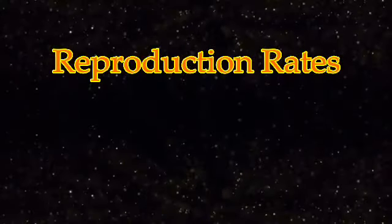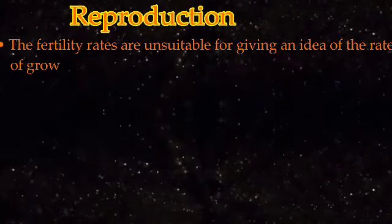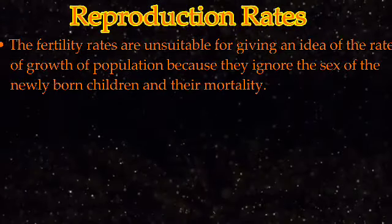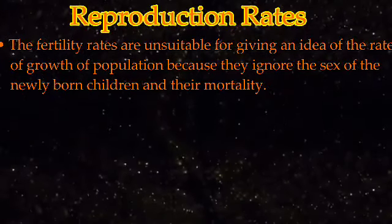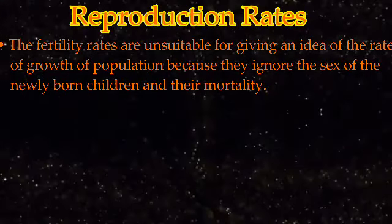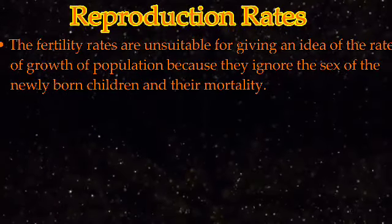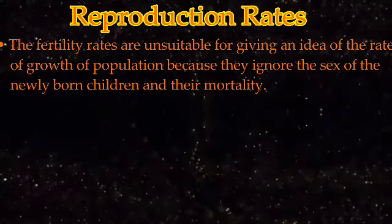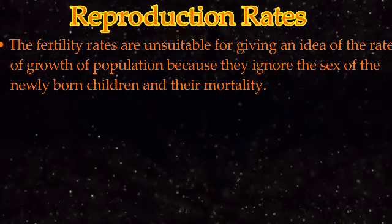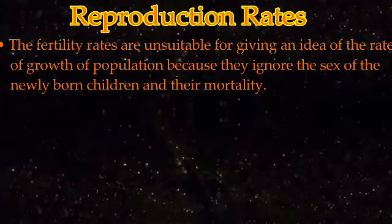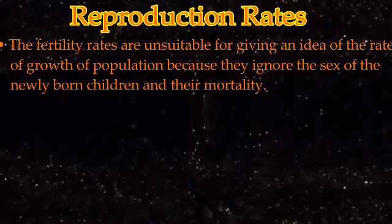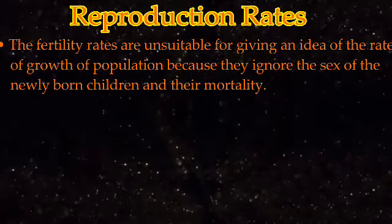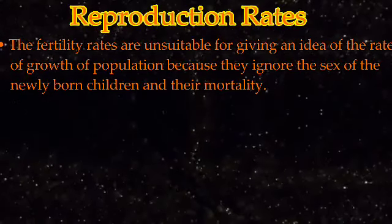The reproduction ratio is computed by establishing a ratio between the number of daughters and that of their mothers. Fertility rates are unsuitable for giving an idea of the rate of growth of population because they ignore the sex of the newly born children and their mortality. In order to find population growth we should consider both birth and death rate, but in the concept of fertility only birth rate is considered whereas the death ratio is ignored completely. In reproduction, both fertility and mortality are taken into consideration.